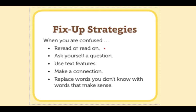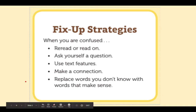Here are some of these strategies: read, reread, or read on. Ask yourself a question. Use text features — you can use pictures in the book or any other text feature to help you understand what you're reading. Make a connection — this means you use something you already know that connects to something in the book to help you better understand — or replace the words you don't know with words that make sense.